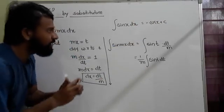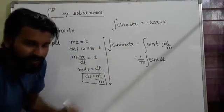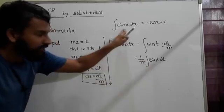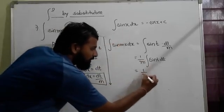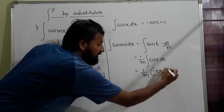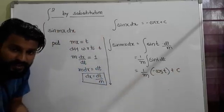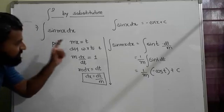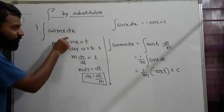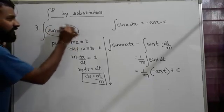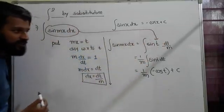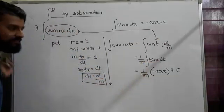This is the standard one. The formula sin(x) dx with respect to x is minus cos(x) + c. It is not mandatory that every time it's x - here we integrate with respect to t. So this is (1/m)[-cos(t) + c].